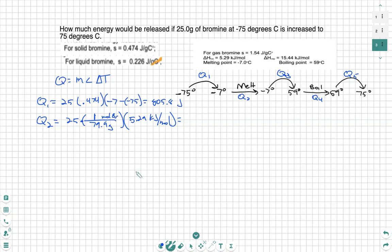So we're going to multiply that through: 25 divided by 79.9 multiplied by 5.29. And we see we get 1.655 kilojoules.